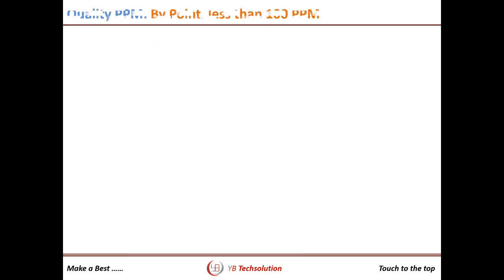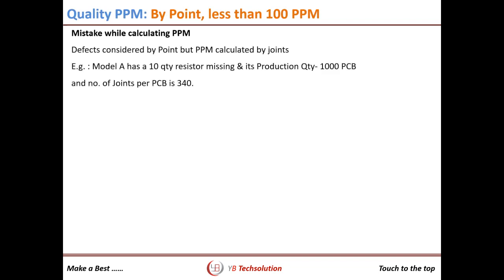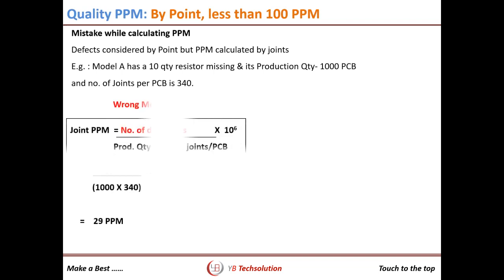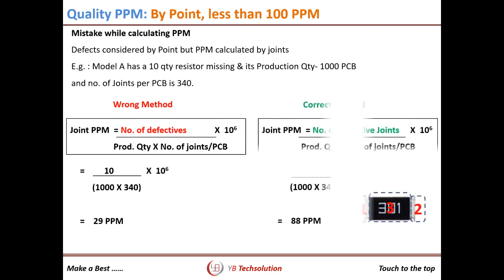Here is one more example from an automobile company. During the audit, we did data verification and found they used the joint method to calculate PPM but collected defects by point method — dividing point-method defect counts by number of joints. Because of this mismatch, the PPM appeared very low, masking the real quality level.